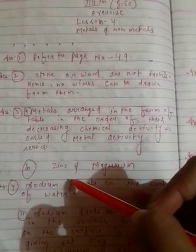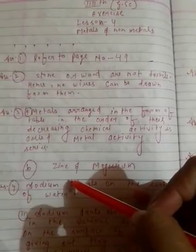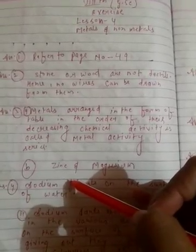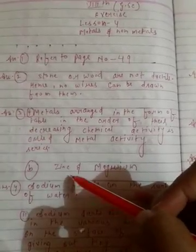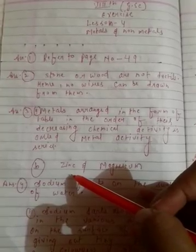Question 3B: Which metals among the following can displace hydrogen from acids? Answer: Zinc and magnesium.